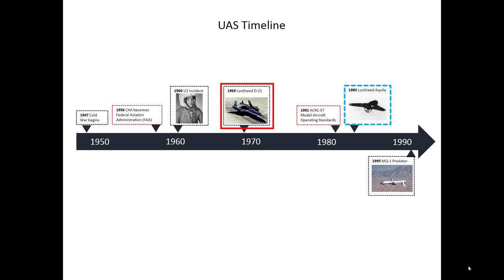The U.S. used the Lockheed D-21 reconnaissance drone to fill the void. Four operational missions with the D-21 took place. The flights were conducted over the People's Republic of China from November 1969 to March 1971 to spy on the Lop Nor nuclear test site. The program was canceled shortly after the four flights, primarily due to issues with recovering the payload.